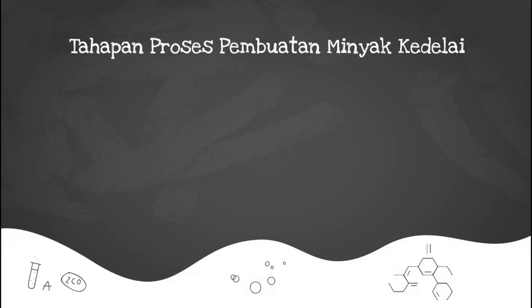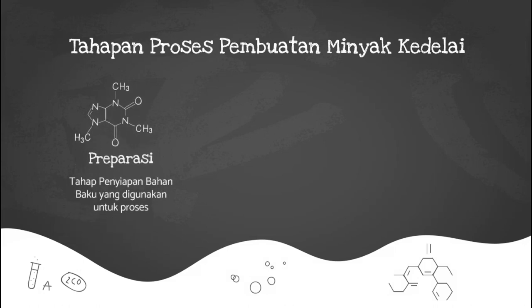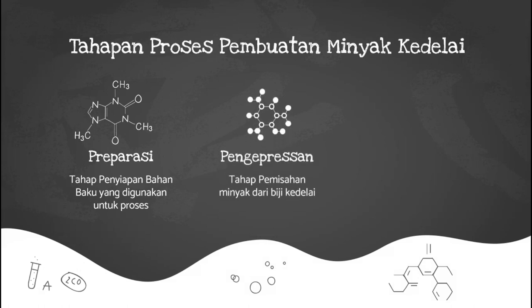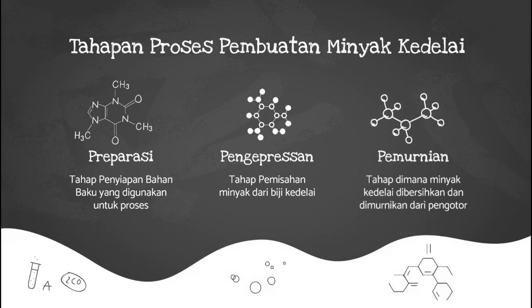Sekarang kita akan belajar mengenai tahapan proses pembuatan minyak kedelai. Tahapan proses yang pertama adalah preparasi, yaitu penyiapan bahan. Tahapan kedua adalah pengepresan, yaitu tahap pemisahan minyak dari biji kedelai. Tahapan yang ketiga adalah pemurnian, yaitu memurnikan minyak hasil dari pengepresan.